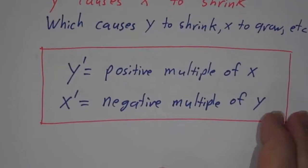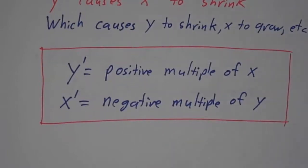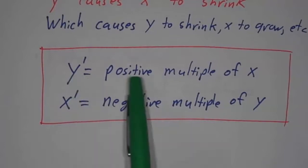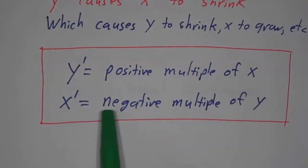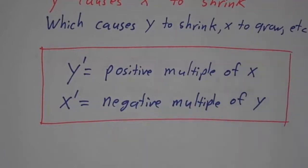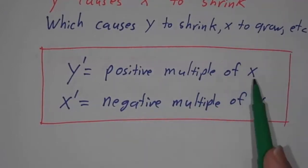So in terms of differential equations, whenever you have two quantities x and y, where y prime is a positive multiple of x, but x prime is a negative multiple of y. That is, x causes y to grow, but y causes x to shrink. Whenever that happens, you're going to see oscillations.